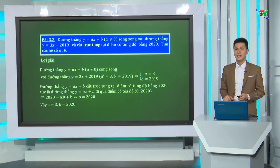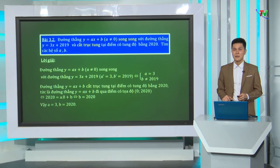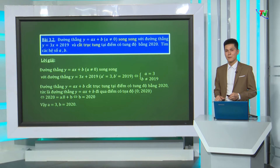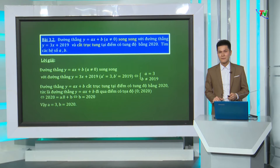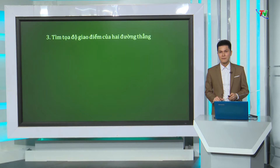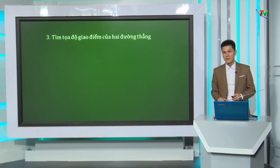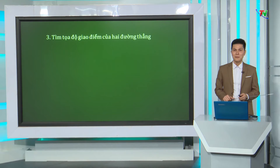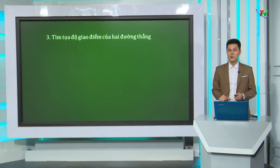Như vậy, thầy và các em vừa cùng nhau tìm hiểu dạng bài tập tìm tham số, hệ số thỏa mãn điều kiện cho trước của bài toán. Chúng ta cùng nhau đi tìm hiểu dạng bài tập tiếp theo: tìm tọa độ giao điểm của 2 đường thẳng.